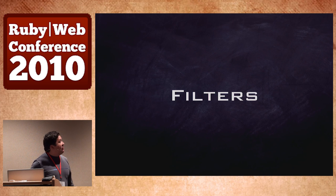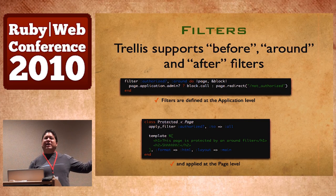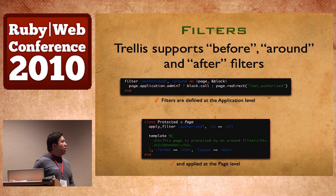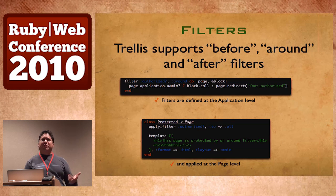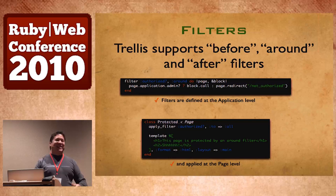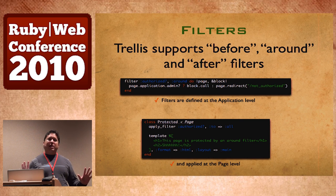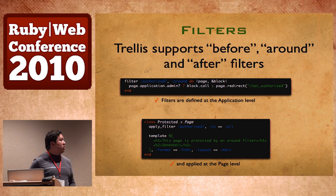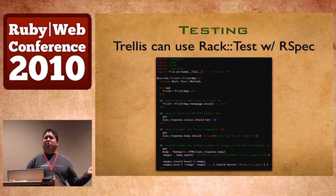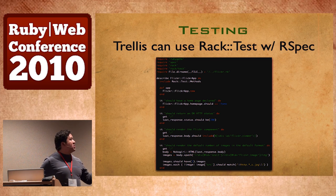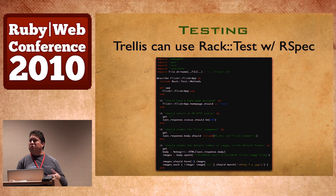I also have before, around, and after filters. This is when I broke 1.8.6 and 1.9, because I used the 1.8.7 block parameter style, so I have to rewrite this to work in 1.9. I think I have two people using it in Japan who sent me emails — so now I own it. My goal is not for people to adopt this massively. For testing, I use Rack::Test — I TDD all my Trellis applications using RSpec and Rack::Test. Very traditional Ruby development TDD.